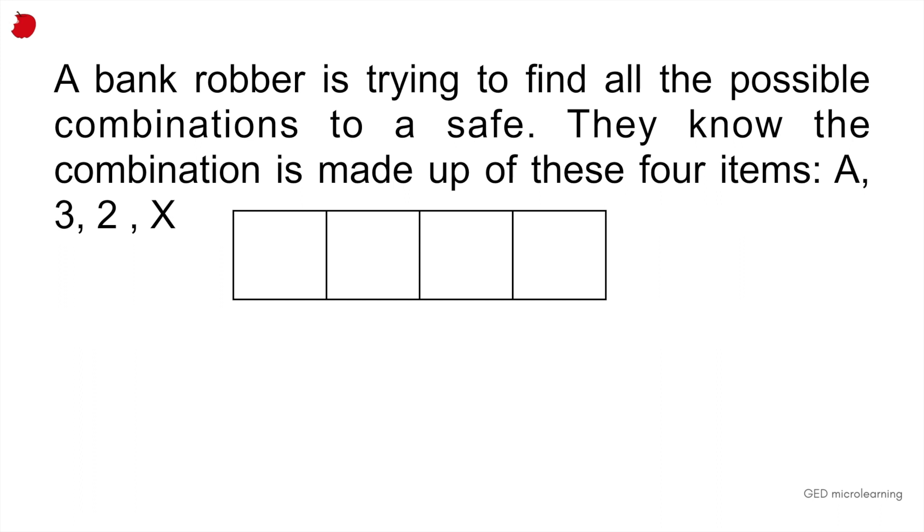So four, and then they're going to decide to put one letter first. So now they have three slots left on that safe combination. Then they put another number in and now they have two slots left and then they've put another number in and that leaves them with one slot. So a robber trying to find a combination to a safe made up of four numbers would give you 24 possible combination options.